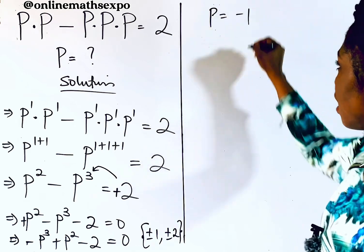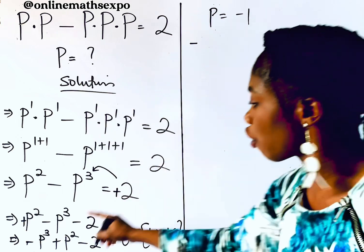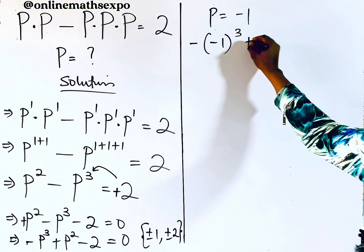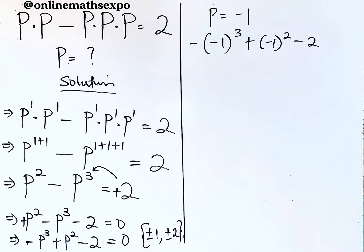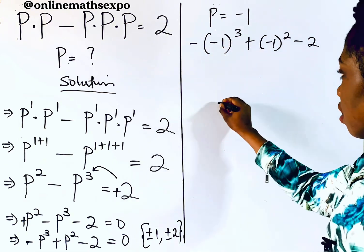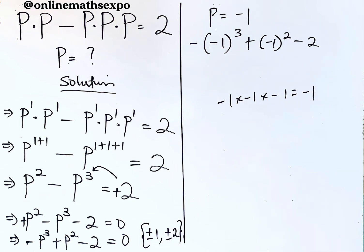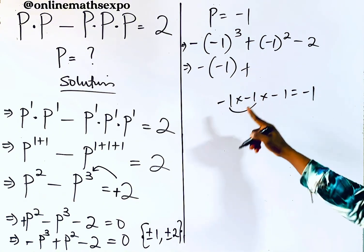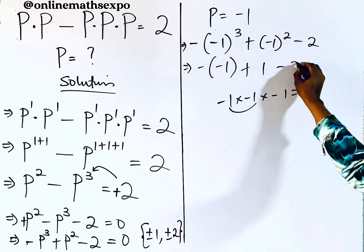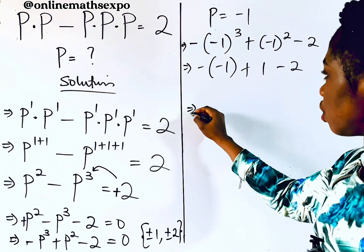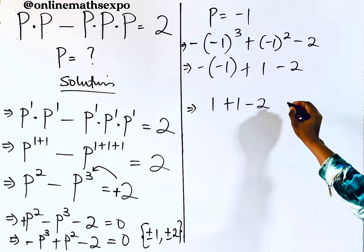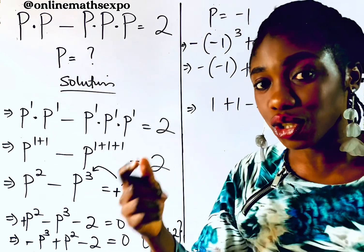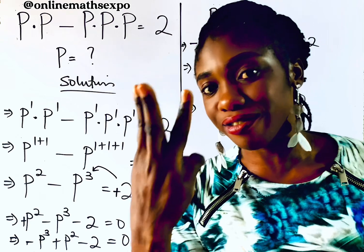Now check p equals negative one. We get −(−1)³ + (−1)² − 2. Negative one cubed is −1, so −(−1) = 1. Then (−1)² = 1. So we have 1 + 1 − 2 = 0. This equals zero, which means p = −1 is a solution. Since this is a cubic, we expect three values of p.